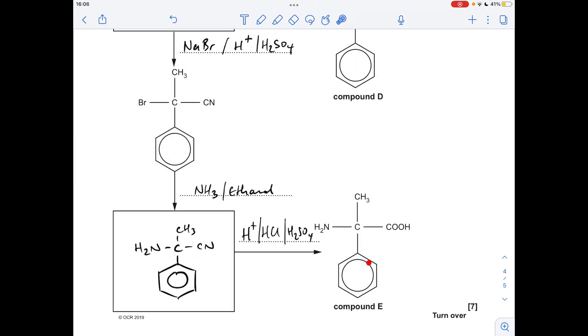And then for the last part, you can do this either way around. So I've gone for the substitution of the bromine for an amino group, so effectively I would react this with ammonia and ethanol, and obviously it's going to give me that there.